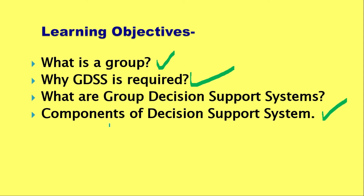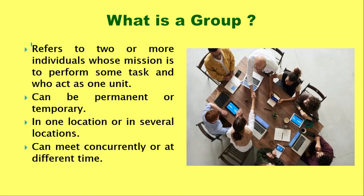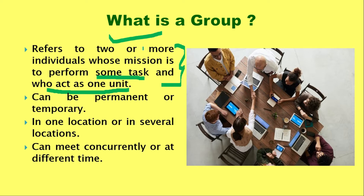When we say a group, it means we are talking about two or more individuals who have the same mission or have to perform the same task, and they have to act as one unity. A group means two or more people who are working on a mission, a task, or a goal, and they have to act as a unity with each other.